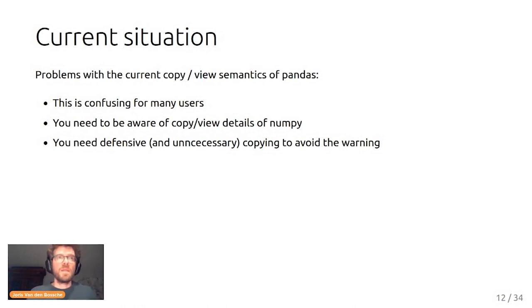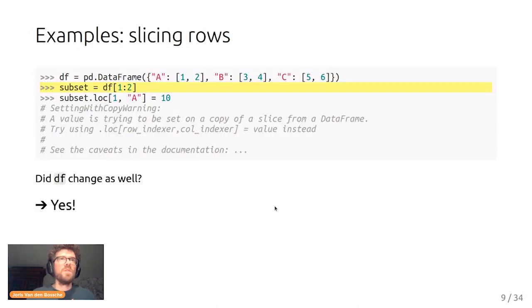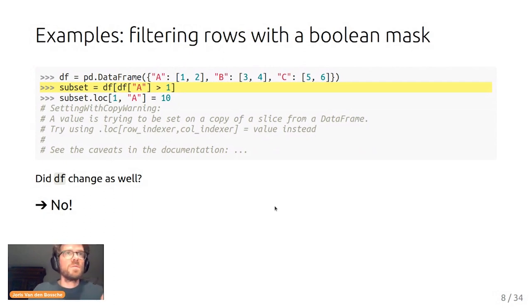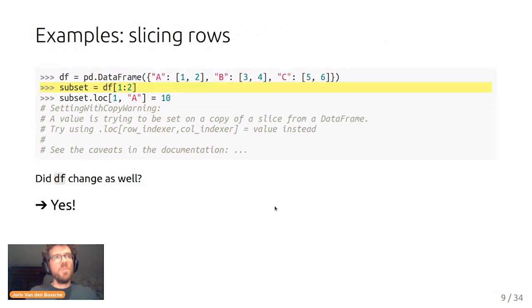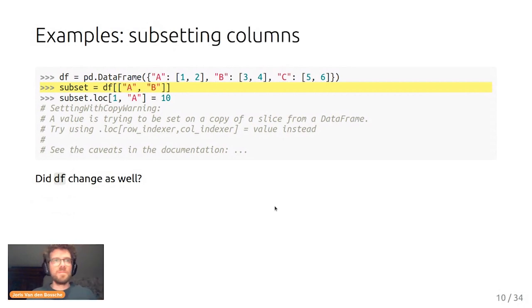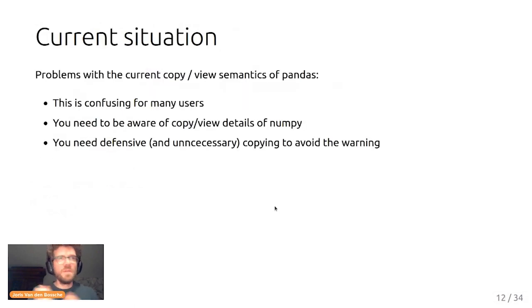To answer those questions and know what will happen, you need to be aware of how copy/views work in NumPy and how pandas uses them. The difference between filtering rows and slicing rows is because in NumPy, the first is fancy indexing and will always create new data, while slicing an array gives a view. As a user, you need to know when something is a view versus a copy, which leads many people to add unnecessary defensive copies to their code.